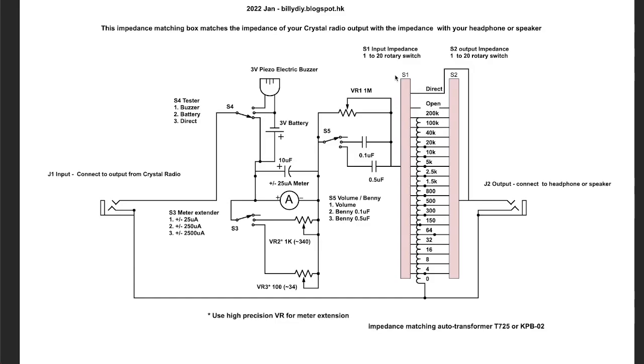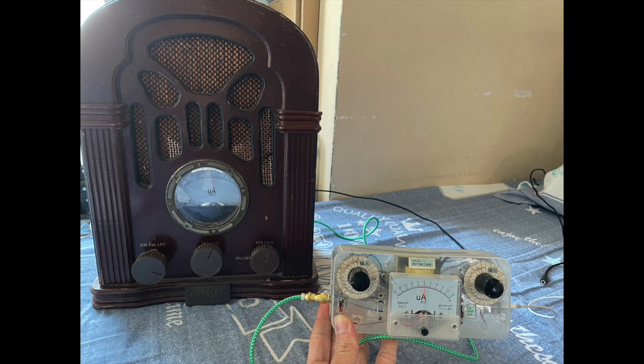For the selector, instead of using the 12 rotary switch, we now have a 1 to 20 rotary switch. This allows us to connect every pin from the KPB-02 to the rotary switch. So we can mix and match, do all kinds of experiments with the different impedance for input and output. Next, let's take a look at the actual components.